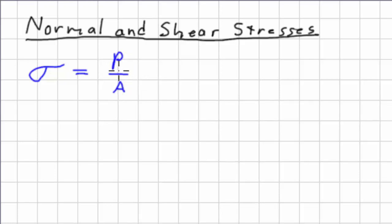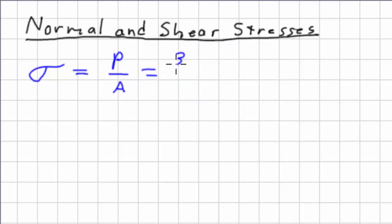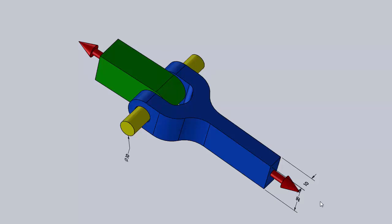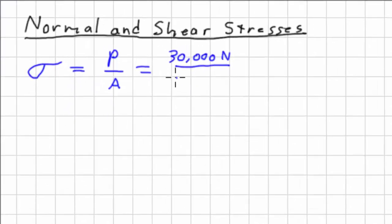So there's our applied force, and we have an area. Our applied force is going to be 30 kilonewtons, 30,000 newtons, all over the area. The area is going to be, for the normal force, this rectangle right here that I've got highlighted. So that is 10 millimeters by 20 millimeters.